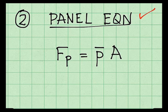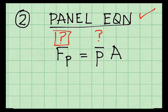Panel equation says that the force due to pressure, which is my goal, is equal to the pressure at the depth of the centroid. And I don't know that, times the area of the plate. And the area of the plate is four feet by eight feet. So this is known. This becomes my new goal. And to find this, I'm going to apply the hydrostatic equation.